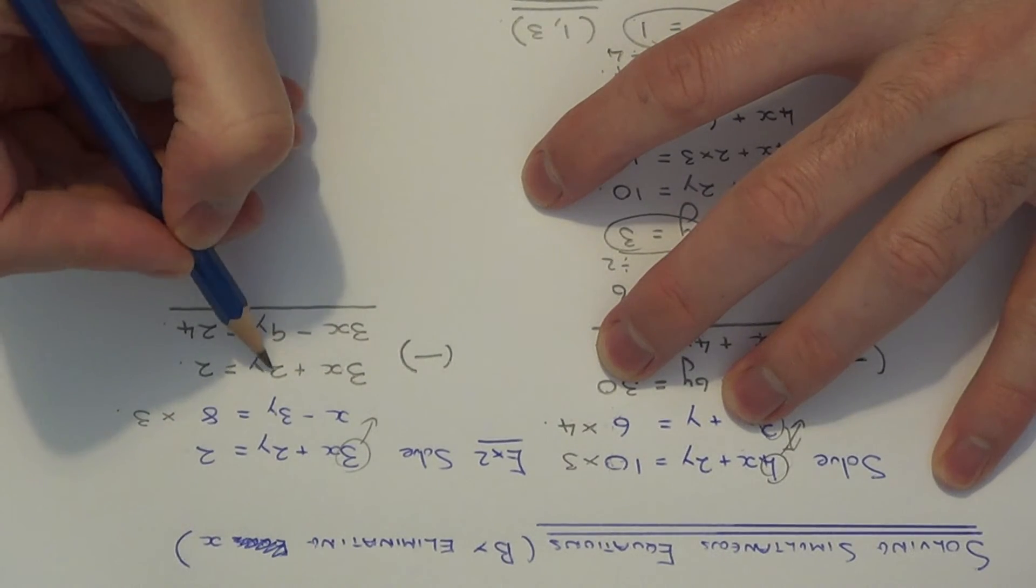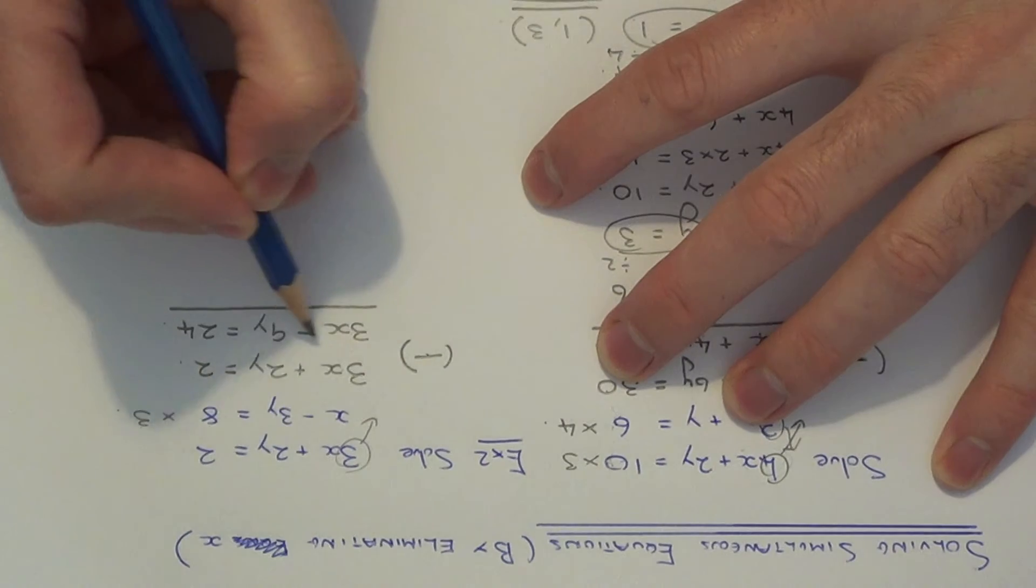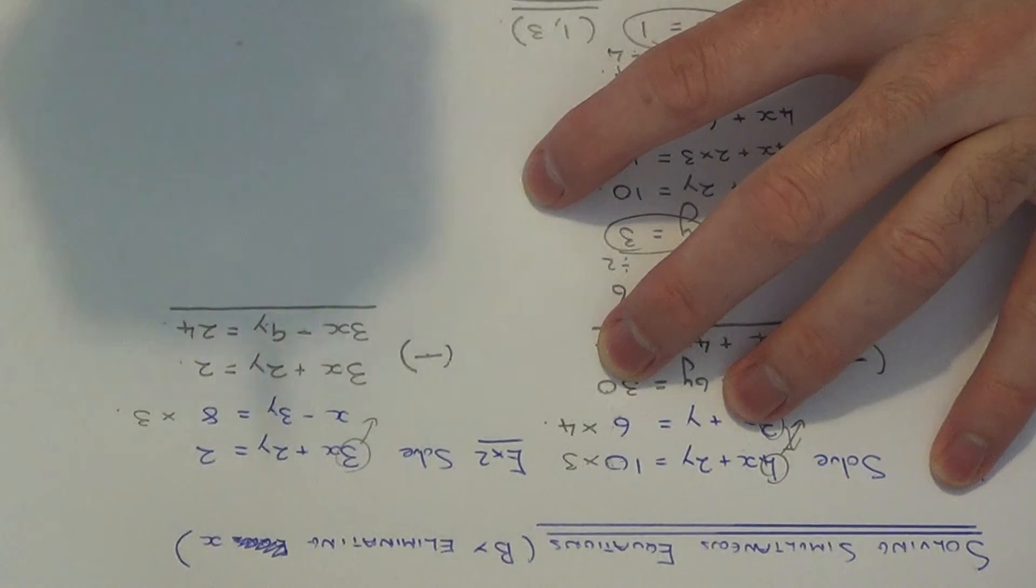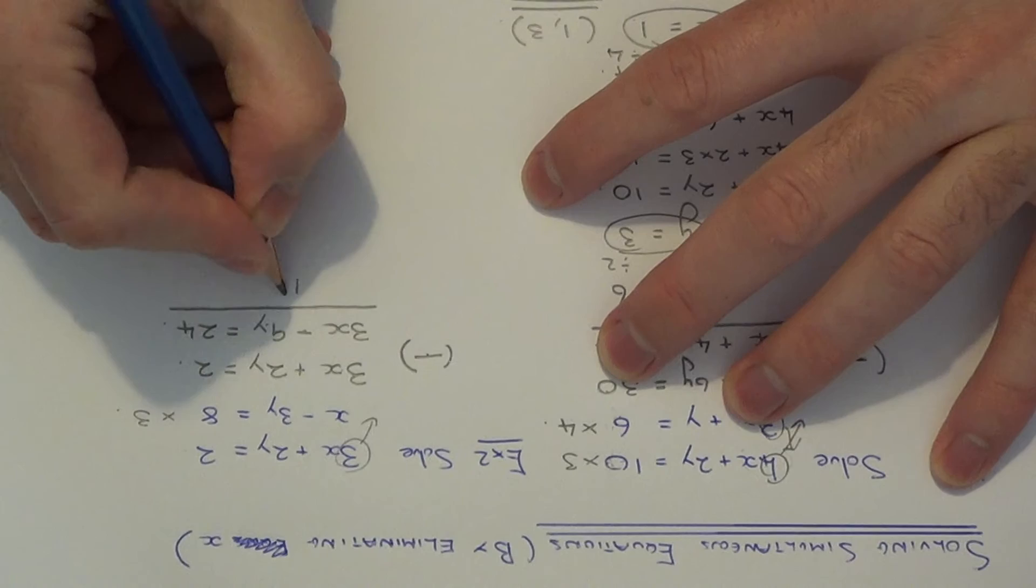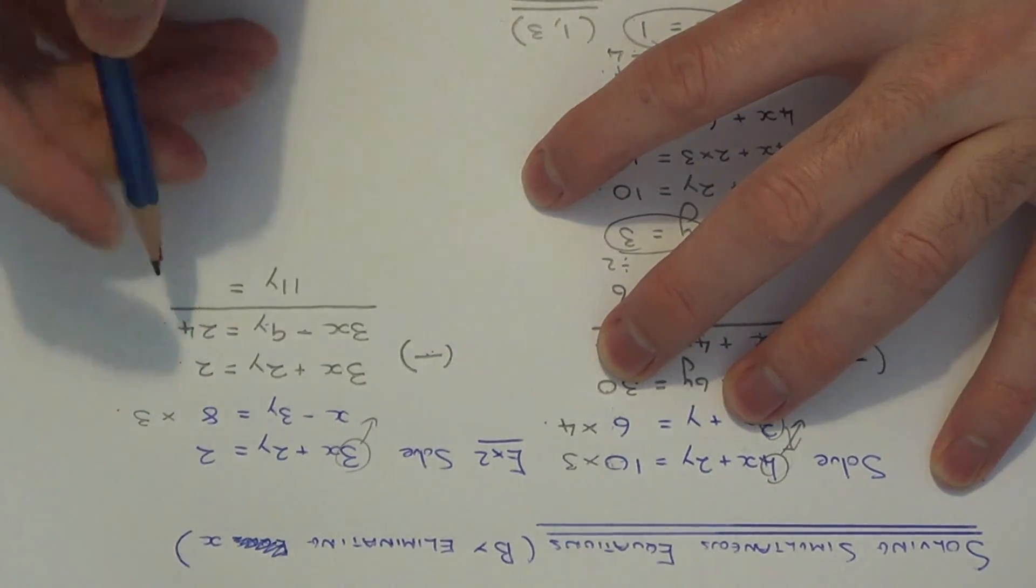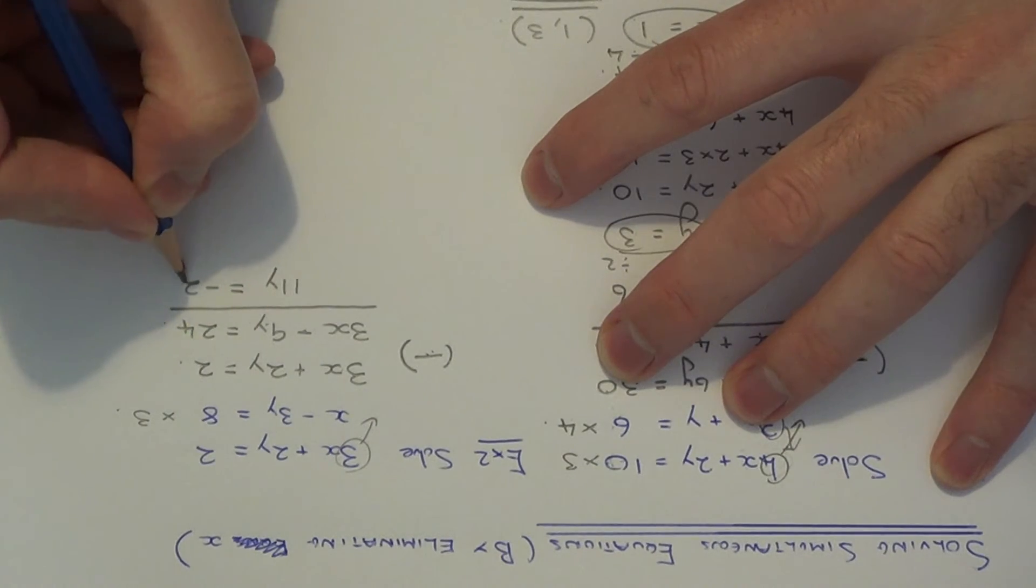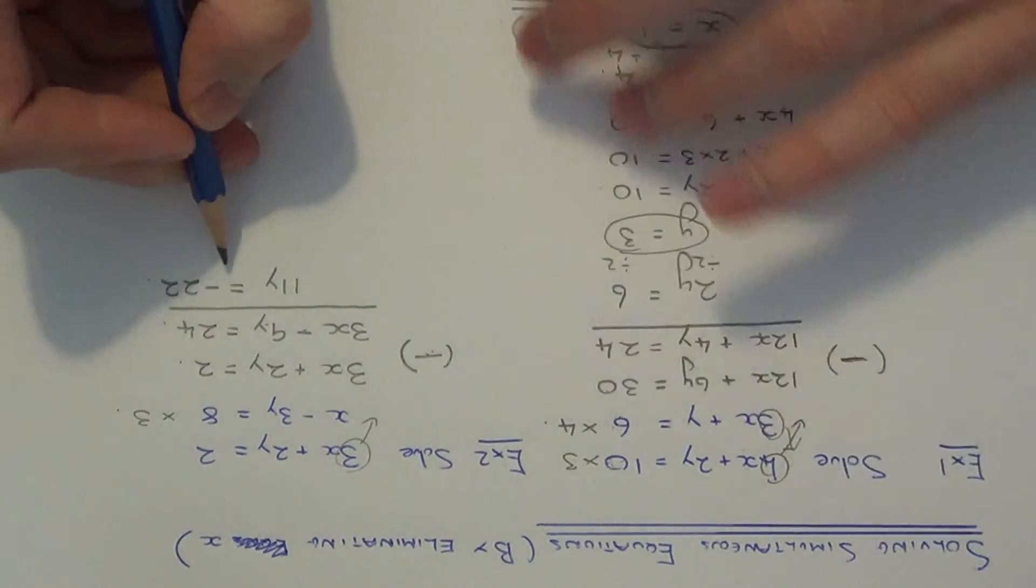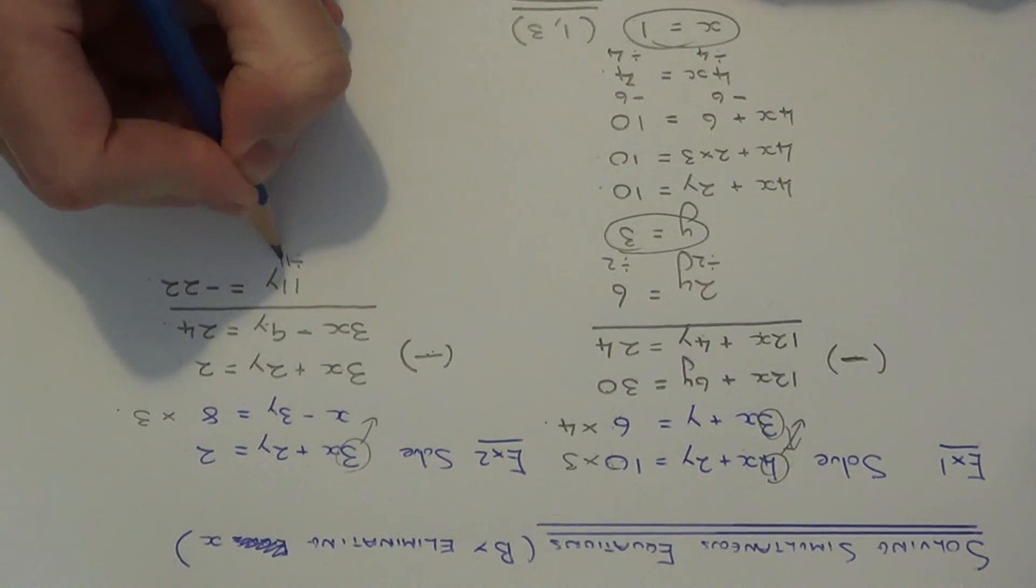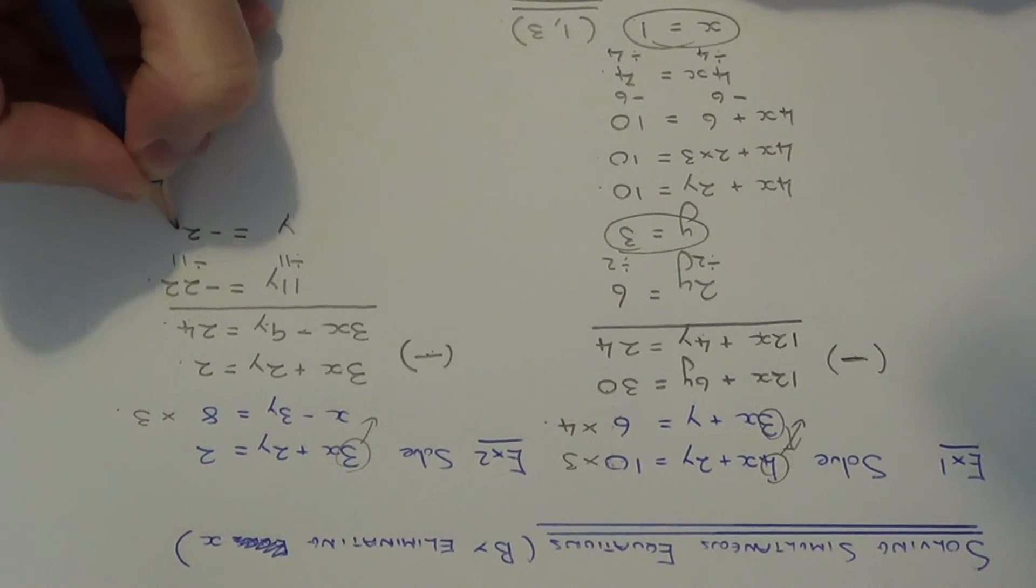So to eliminate the x, we need to take away the equations. Because 3x take away 3x is 0x. So if we do the same for the y's, 2y take away minus 9y, the two negatives in the middle become positive. So it's actually the same as doing 2y add 9y, that gives 11y. And the numbers at the end, 2 take away 24, is negative 22. So again, we just have a simple equation here with y in. So if we just solve this equation by dividing both sides by 11, then you get a solution of y equals minus 2.